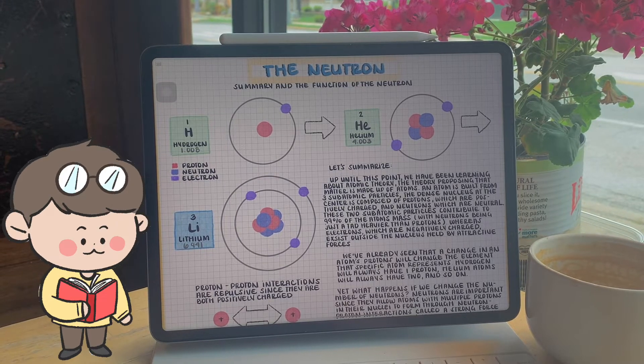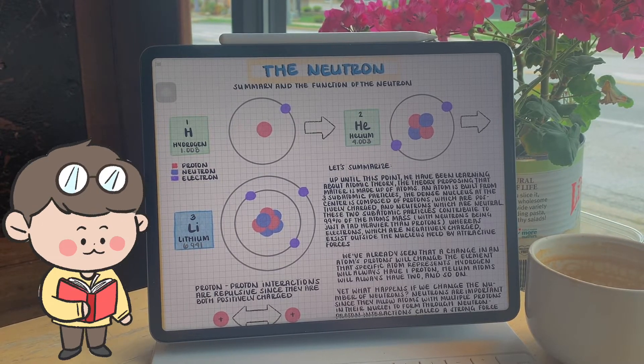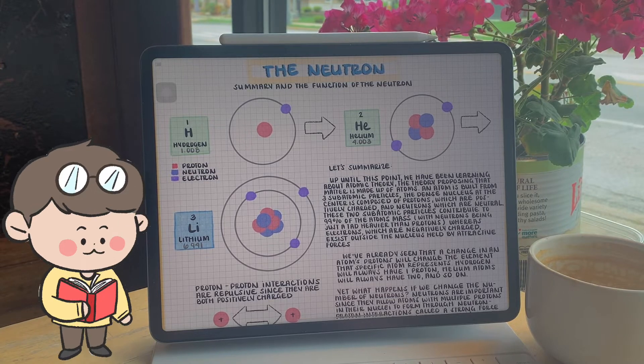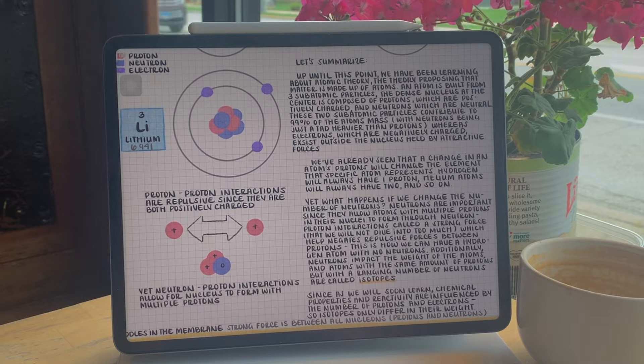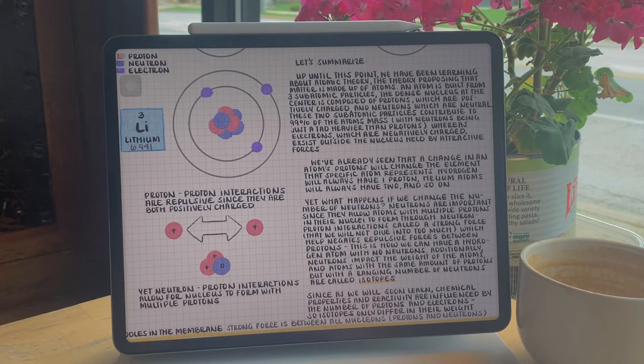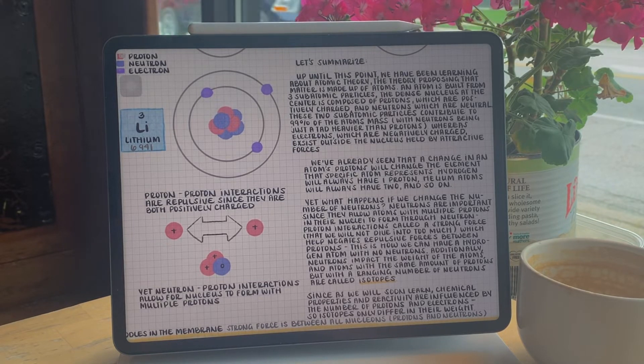whereas electrons, which are negatively charged, exist outside the nucleus, held by attractive forces. We've already seen that a change in the number of protons in an atom would change the element that specific atom represents.